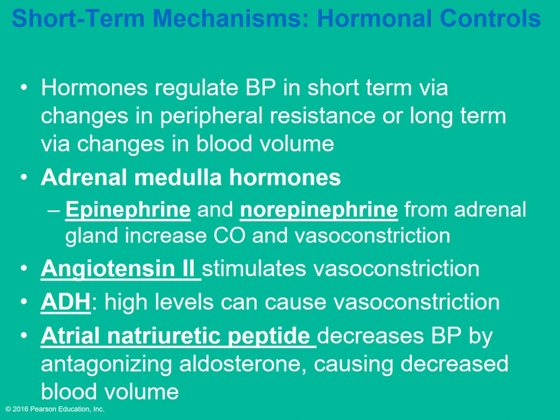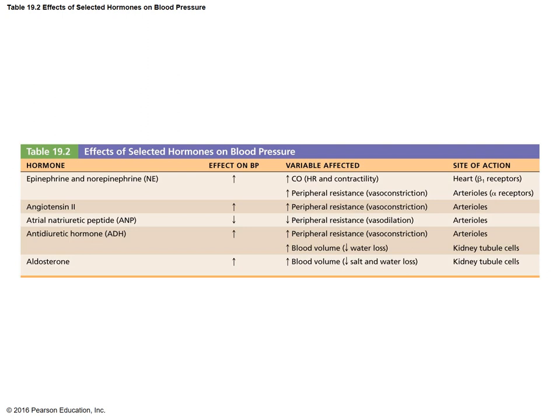Hormones can regulate blood pressure in the short term. Epinephrine and norepinephrine can increase cardiac output and cause vasoconstriction. Angiotensin II stimulates vasoconstriction. High levels of ADH can also cause vasoconstriction. Atrial natriuretic peptide decreases blood pressure. This chart shows some of the hormones and their effects on blood pressure.